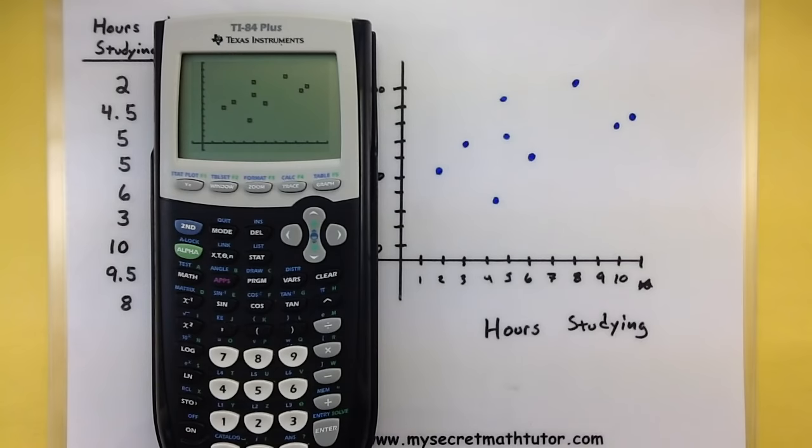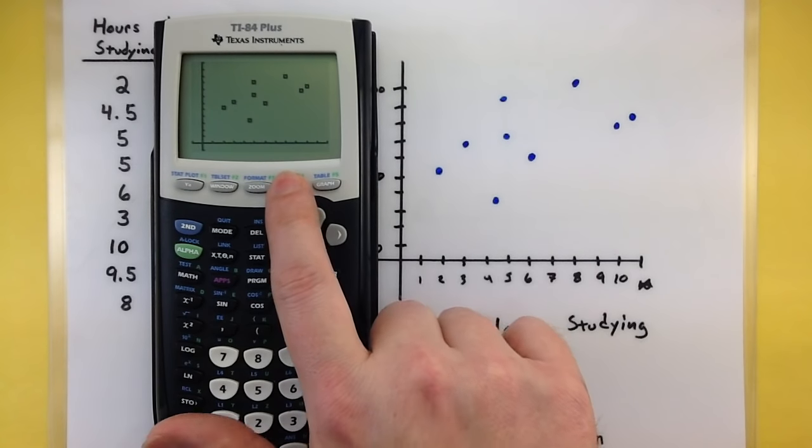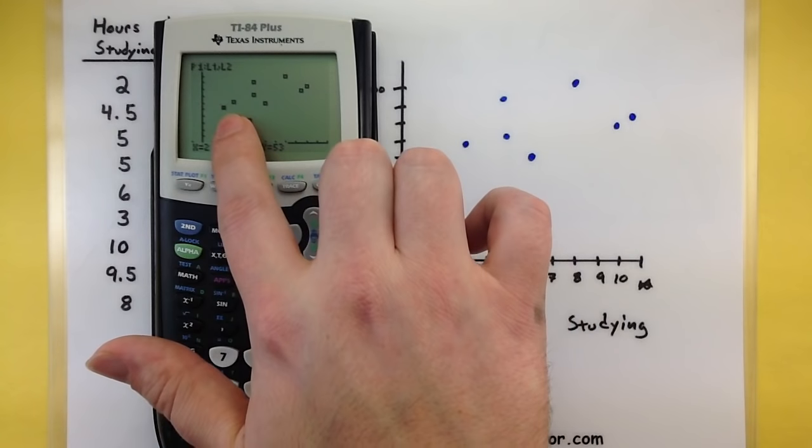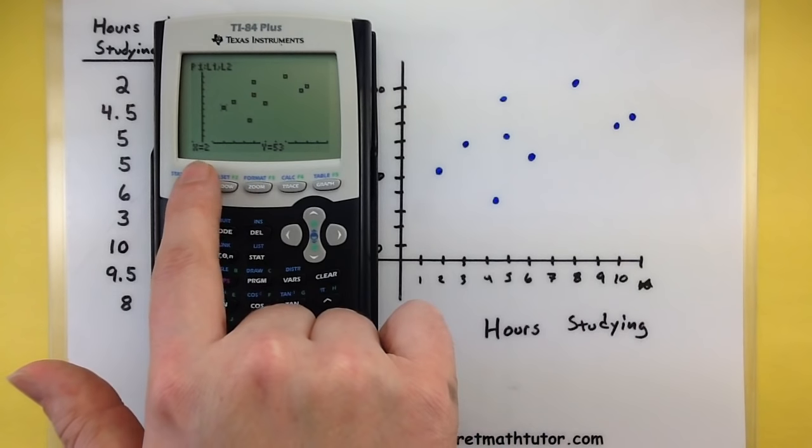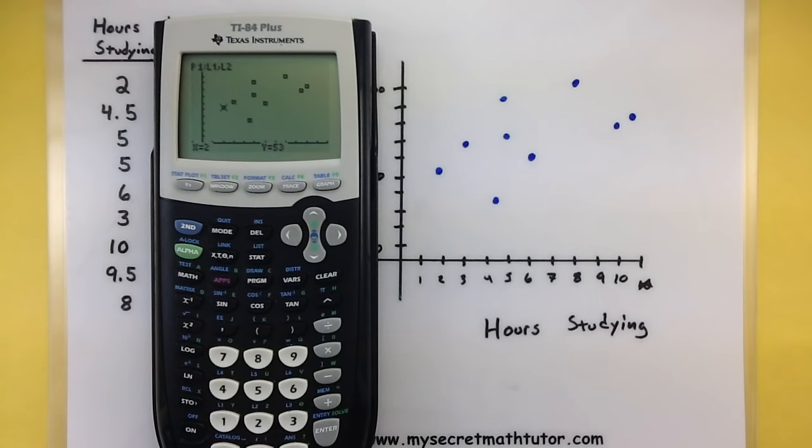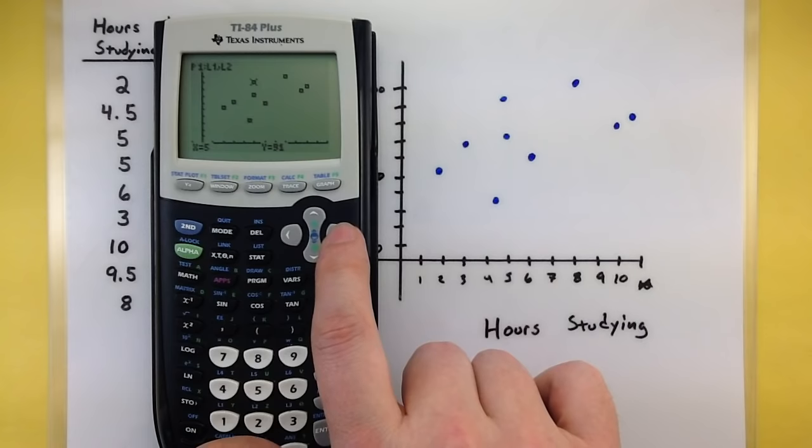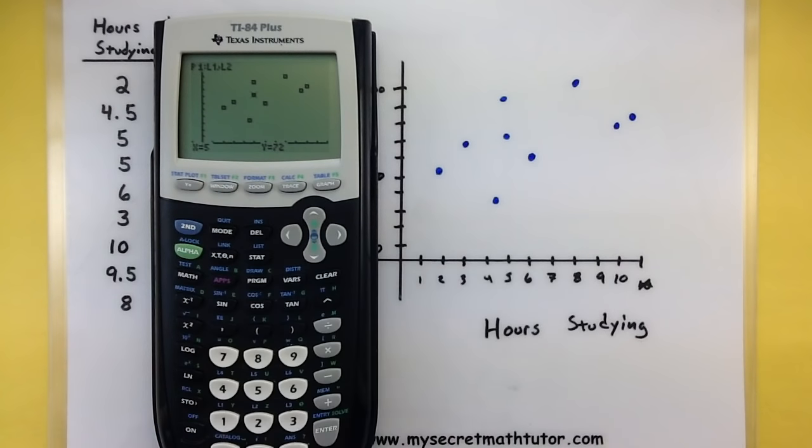Now if you want to see the value of these individual points, you can use your trace button to step through them one at a time. You'll notice that when I press that, it's now highlighting one of my data points and giving me the X and Y values. So it says 2 and 53, which happens to be our first data point. By using the right and left arrow buttons, it'll jump to other data points so I can see what those ones are. So this guy looks pretty good.